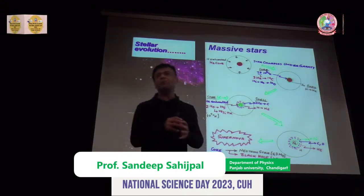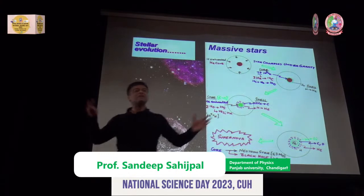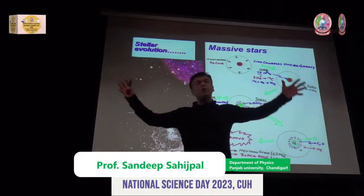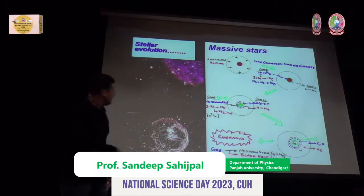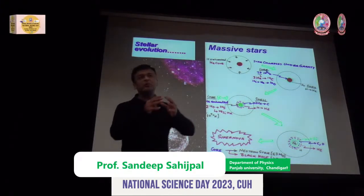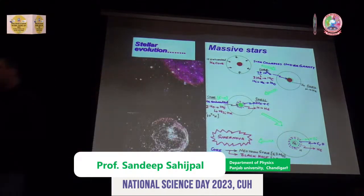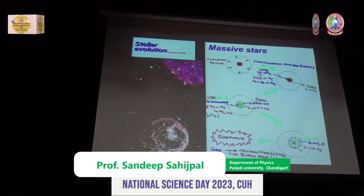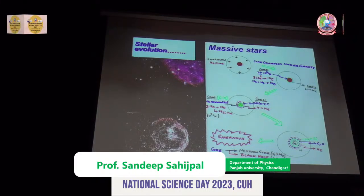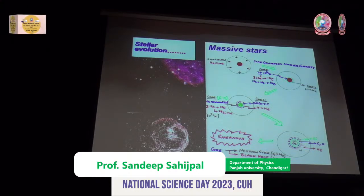Eventually, when stars have produced these elements, especially if it is a massive star, the star explodes in what we call a supernova explosion. During this supernova explosion, matter is thrown into interstellar space. From this matter, the next generation of stars can be born. Stars are born, they live for some time, they die, and when they die the next generation of stars are born — the cycle continues.